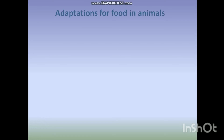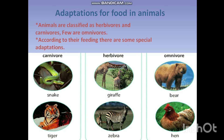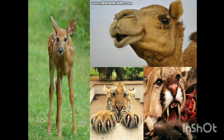Now let's study adaptations for food in animals. Animals are classified as herbivores and carnivores. A few are omnivores. Special adaptations are seen in each category to make the process of feeding easy.